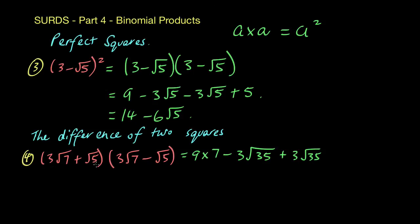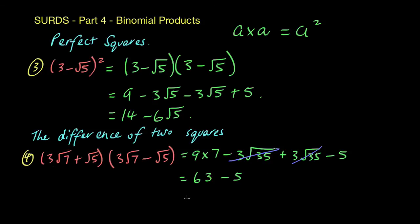Last of all, plus root 5 multiplied by minus root 5: plus times minus gives a minus, and root 5 times root 5 is 5. Simplifying: 9 times 7 is 63. Now you always see this with the difference of two squares — we've got minus 3 root 35 and plus 3 root 35, so they cancel each other out. And last of all we've got minus 5. So 63 take away 5 gives you 58.